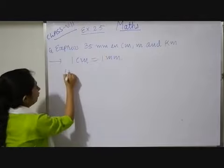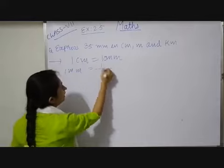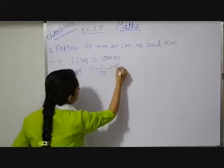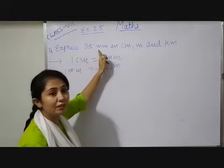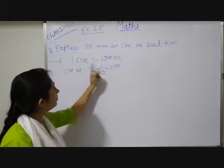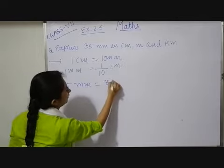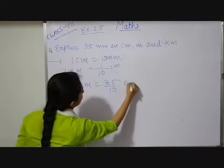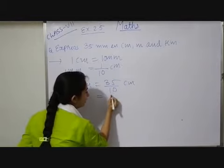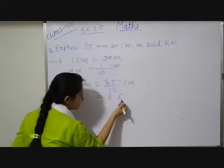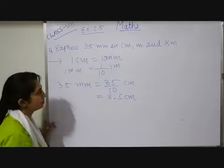So, 1 mm equals 1 by 10 centimeter. Now, in place of 1, I am having 35. So, both sides I will multiply by 35. I have 35 mm which equals 35 upon 10 centimeter. After dividing, from the last digit before the number, I have to place a decimal. So, my answer is 3.5 centimeter.